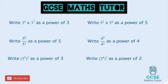So answers for these. Three to the power of four times three to the power of seven — where we add the powers — so that's three to the power of eleven. Going downwards: five to the power of eight divided by five to the power of three, so we subtract the powers, and eight take away three is five — so five to the power of five.